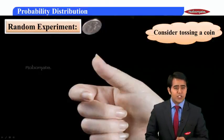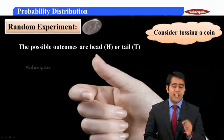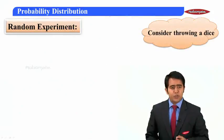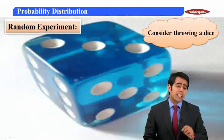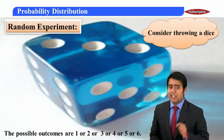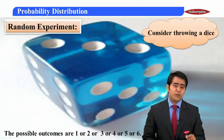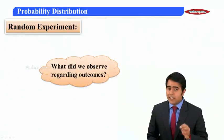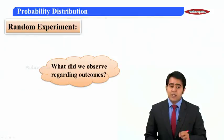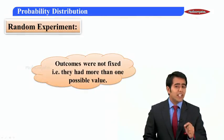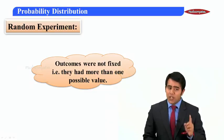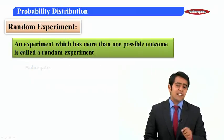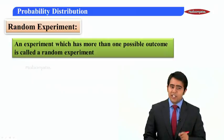Let us start with random experiment. Consider tossing a coin - the possible outcomes are head or tail. Similarly, when throwing a dice, the possible outcomes are one, two, three, four, five, or six. We observe here that the outcomes were not fixed, having more than one possible value. This gives us the definition: an experiment which has more than one possible outcome is called a random experiment.